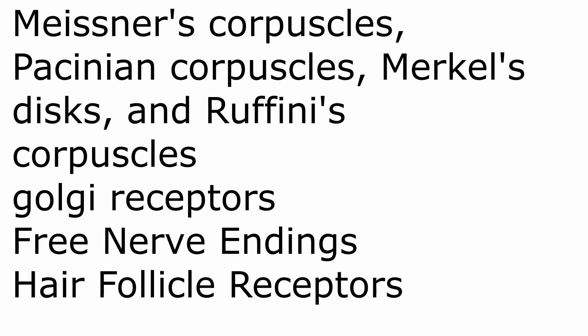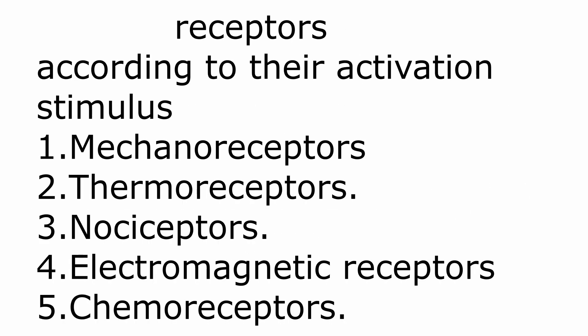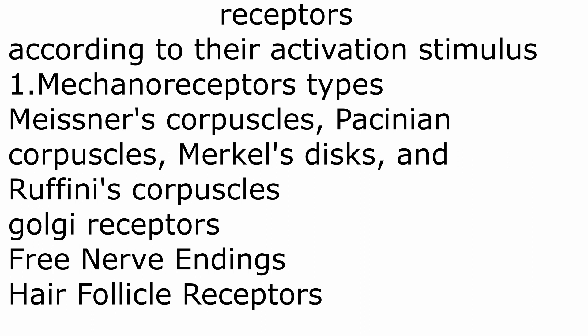Before going forward, let's summarize what we've learned: receptors are the connections of our body to the outer world, there are 5 classes by activating stimulus and 2 by structure, and the first class is mechanoreceptors with its various types.